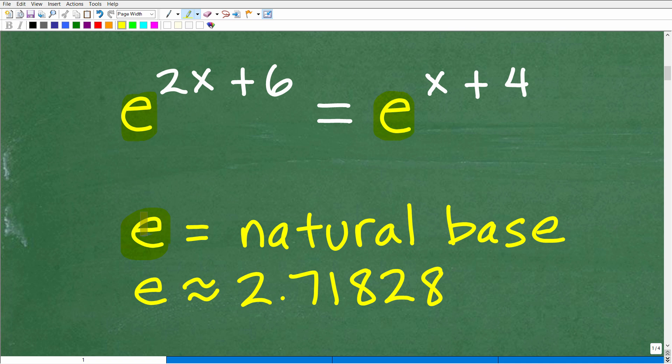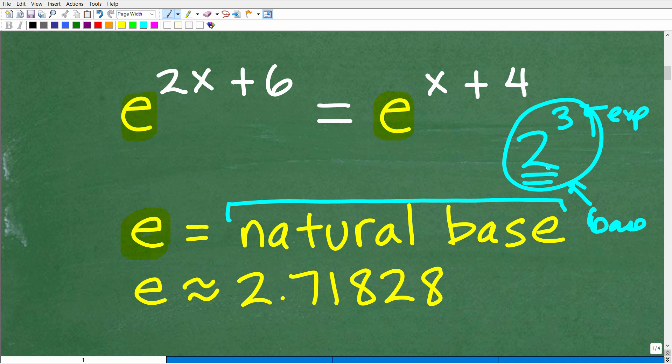All right, then we'll make clear why this is an exponential equation. e in mathematics is a variable. It stands for a number, okay, but we refer to it as the natural base. So if I have a power like 2 to the third power, 2 is the base, right, and 3 is the exponent. The entire thing is the power. So when we have powers where the base, like it would be e to the third power, we're talking about the natural base e.